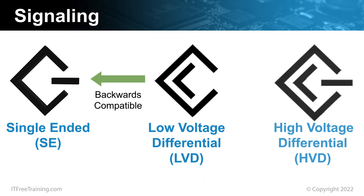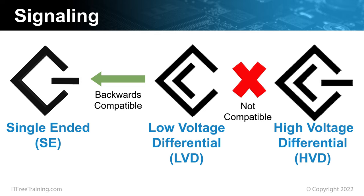The last signaling type is high-voltage differential, or HVD. This type of signaling still uses two wires; however, there is no ground wire. Instead, the wires are used for data and the difference in signal between the two is measured in order to determine if a zero or a one bit has been sent. Since the signaling is so different to the other two, it is not compatible with them. If you mistakenly connect the devices together, it can potentially damage them or the SCSI adapter. You generally won't need to worry about this as the plugs are different for HVD compared to LVD and SE. This could be a problem if you purchased a custom cable or made your own cable.